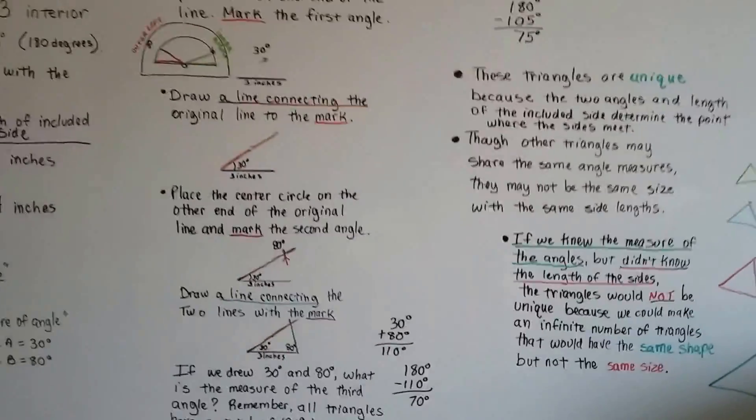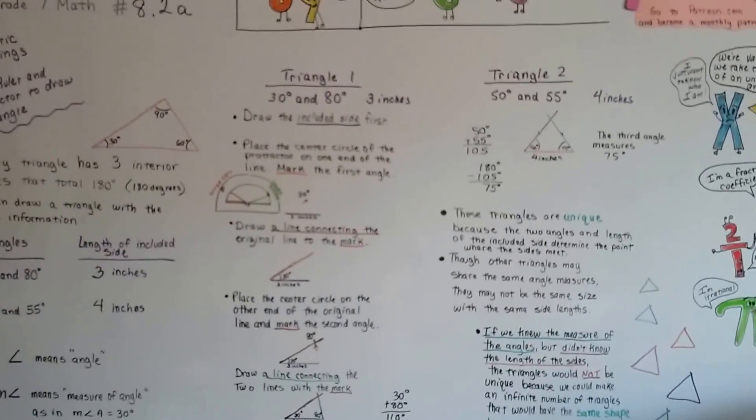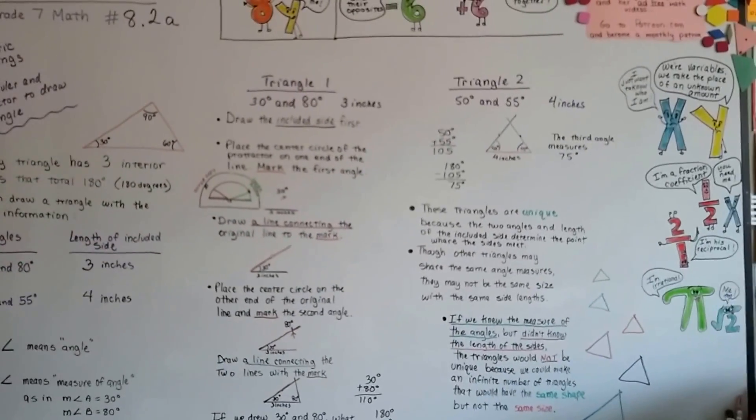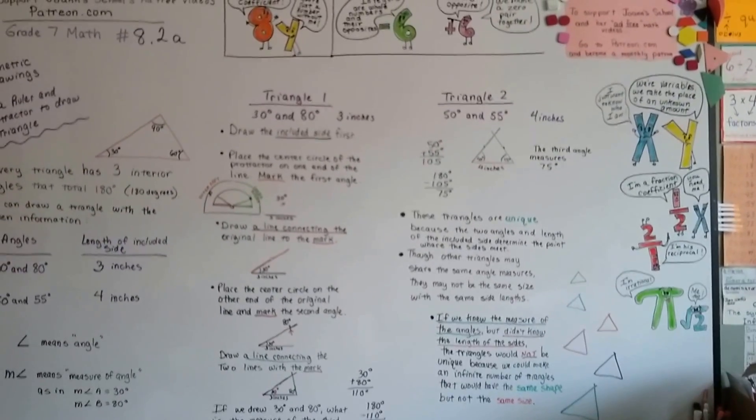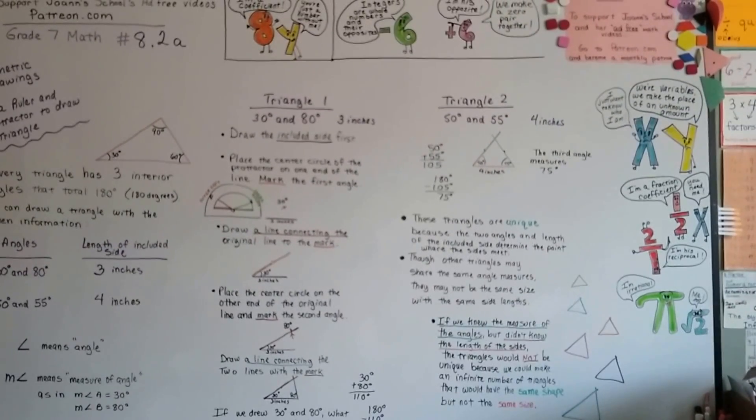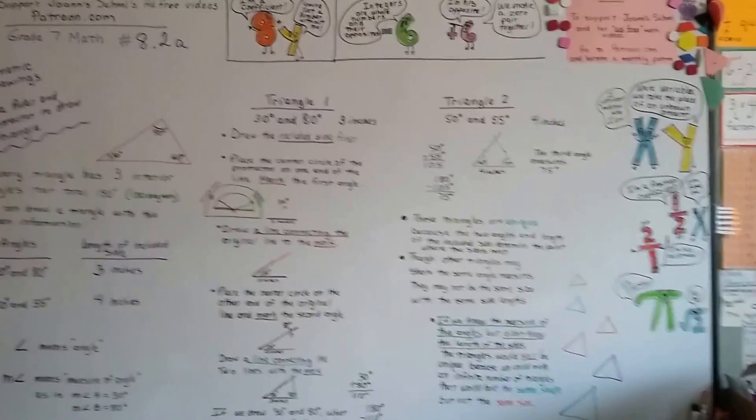We're going to talk more about what makes a triangle unique and how to tell if it's unique or not, or if the measures of angles and lines would actually form a triangle or not. And that's going to be in 8.2b. I hope to see you there.